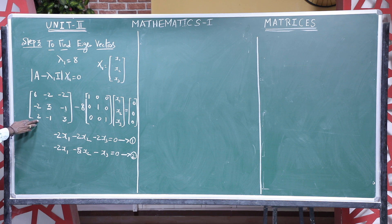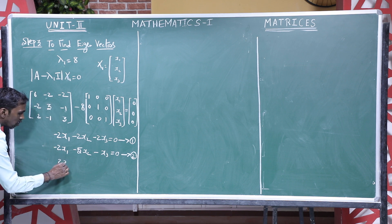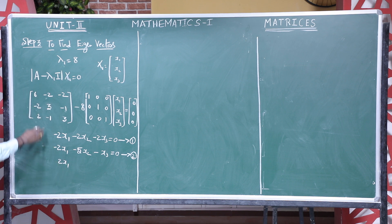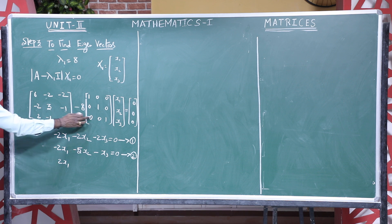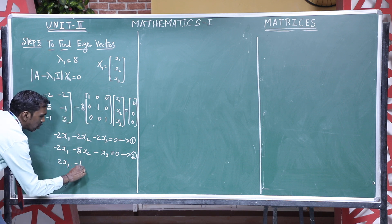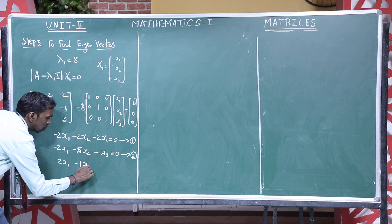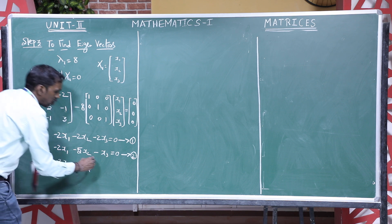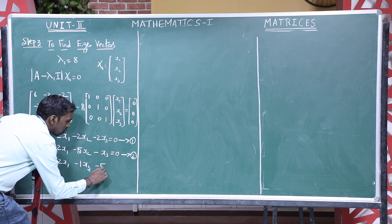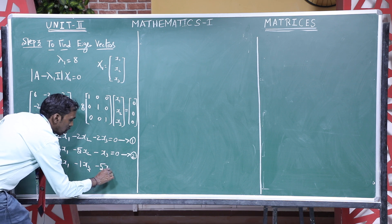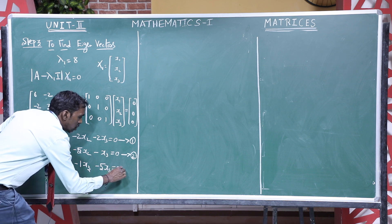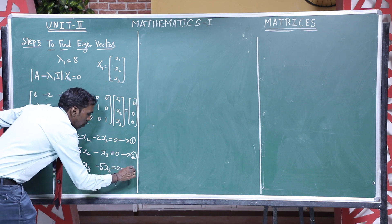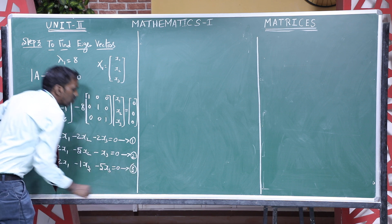For the third equation: 2·X1, minus 1·X2, and 3 minus 8 gives minus 5, so minus 5·X3 = 0. This is our third equation.